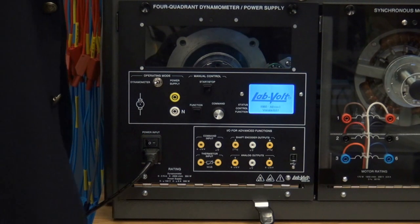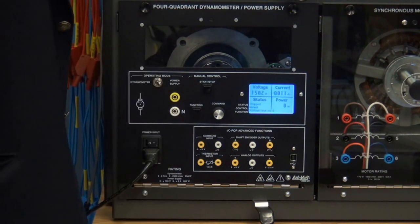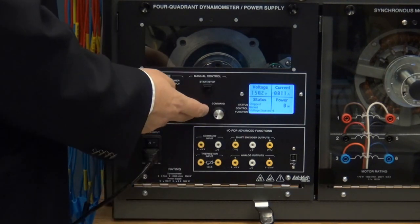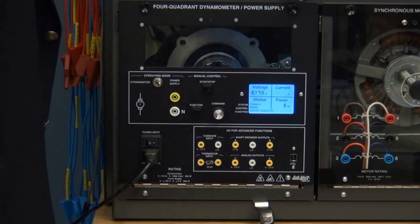When the versatile four-quadrant dynamometer power supply is used as a power supply, it can act as a DC voltage source of up to 150 volts positive or negative, and can also be used as a current source positive or negative up to almost 5 amps.